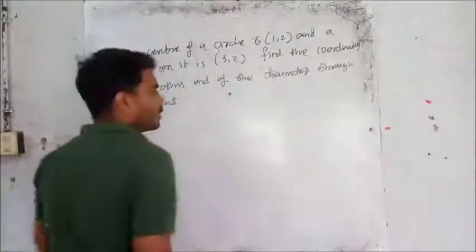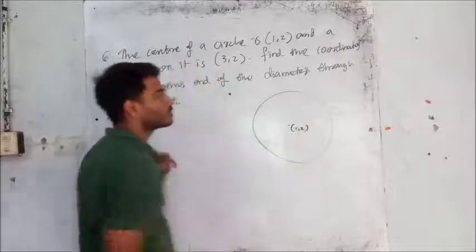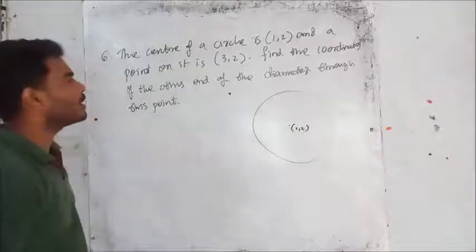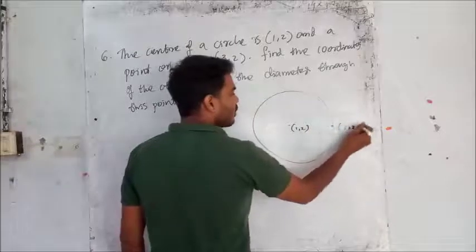The center of a circle is (1,2), and a point on it is (3,2). This point is (3,2).